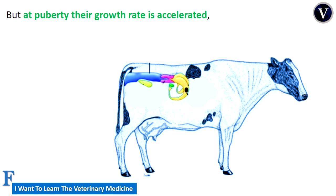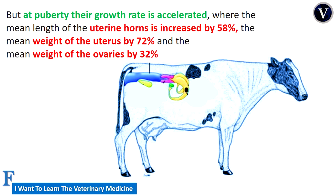During the pre-pubertal period, the growth of the genital organs is very similar to that of other organ systems. But at puberty, the growth rate of the reproductive system is accelerated. The uterine horns increase by 58%, the weight of the uterus increases by 72%, and the weight of the ovaries increases by 32%, more than the acceleration of the growth rate in the body.